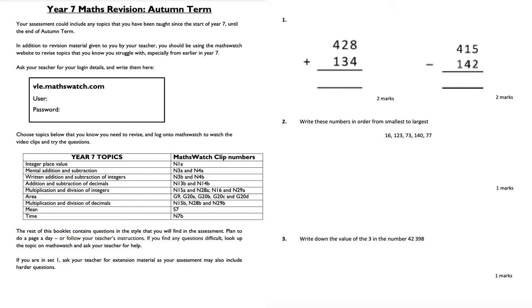MathsWatch is also appropriate for Key Stage 3 students in Year 9 and Year 10. Before I start the test, there is a huge overlap between Key Stage 3 and GCSE, and also between GCSE foundation and Key Stage 3, and even Key Stage 2 and Key Stage 1. This test is predominantly aimed at a typical Year 7 student sitting a mini test or module test.